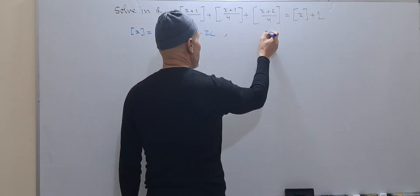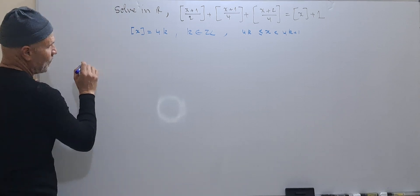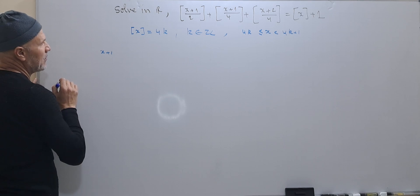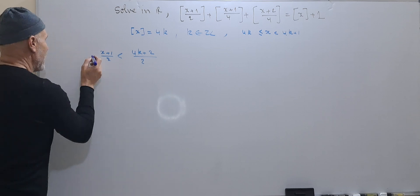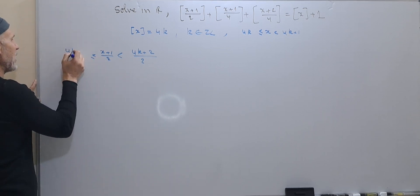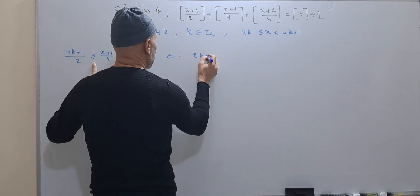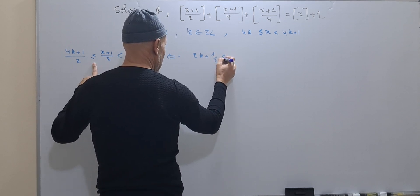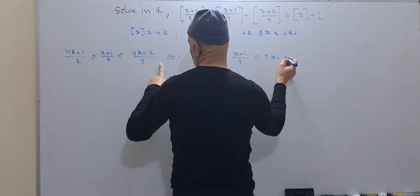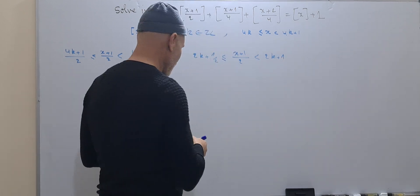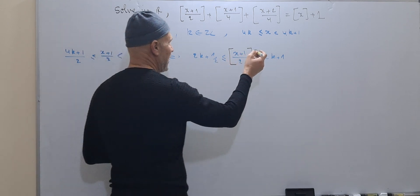This means that 4k ≤ x < 4k+1. So, (x + 1/2) satisfies 4k+1/2 ≤ x+1/2 < 4k+2/2, which means 2k+1/2 ≤ x+1/2 < 2k+1. When we take the integer part of this, it will be equal to 2k.